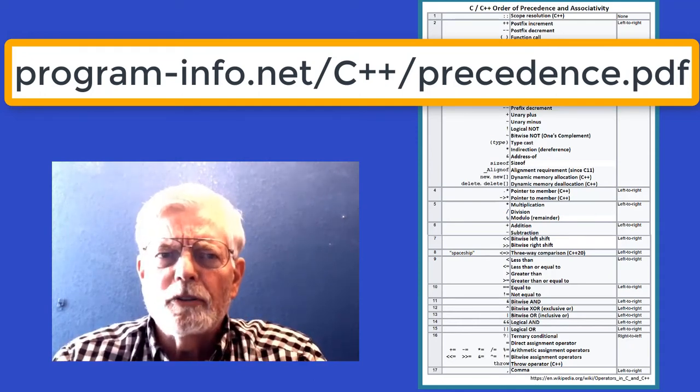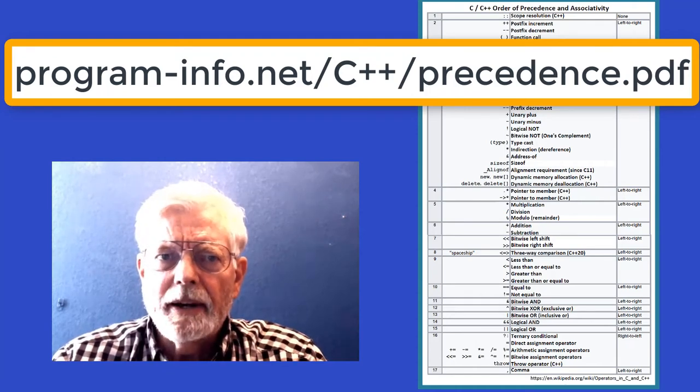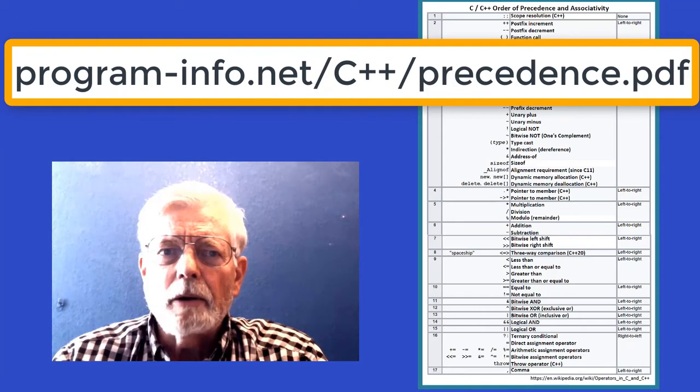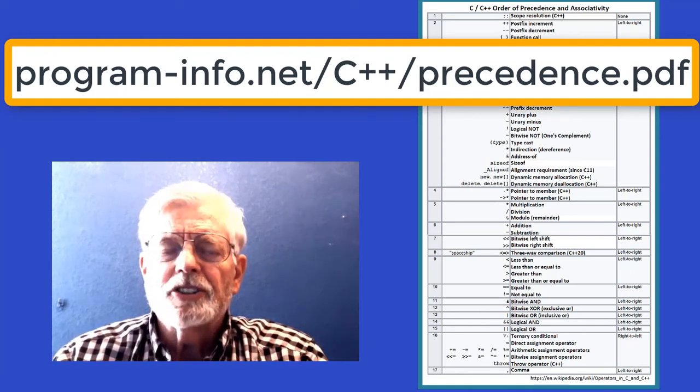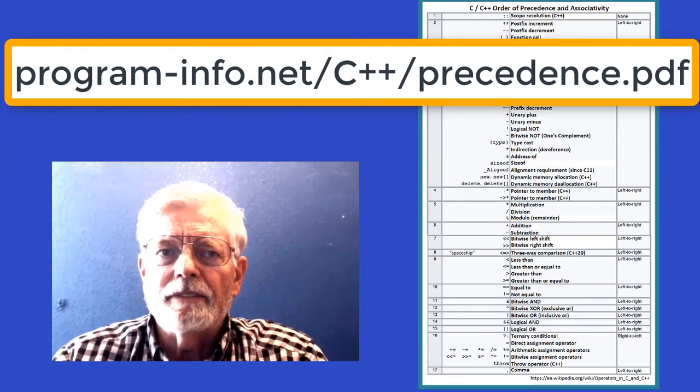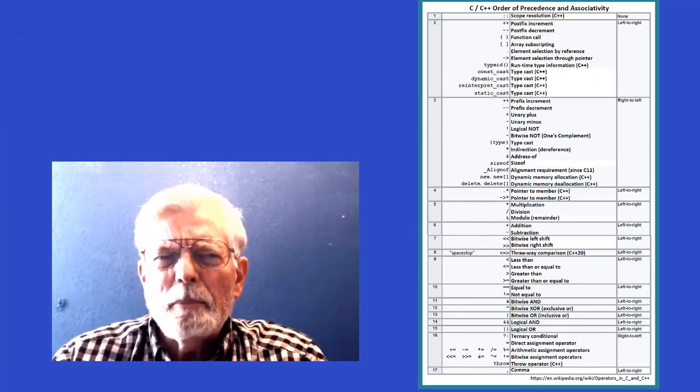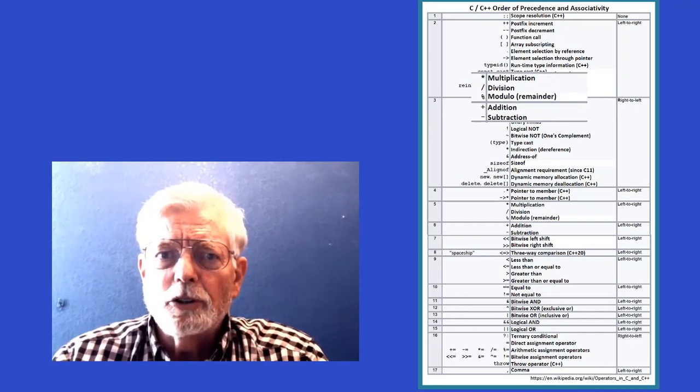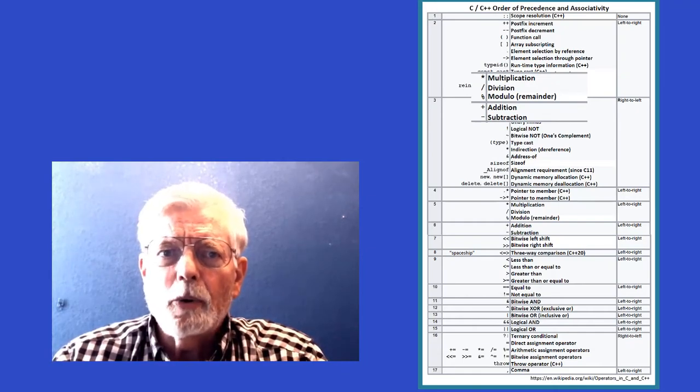I copied this chart from Wikipedia and reformatted it to one page. My updated version can be obtained at program-info.net/C++/precedence.pdf. Don't try to memorize this chart. You will become familiar with the list as you use the different operators in your program.